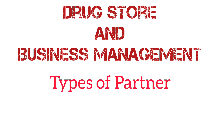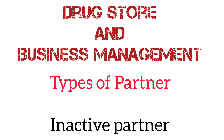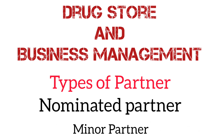There are many types of partners. One is a working partner — someone who actively works in the business. There is also an inactive partner who contributes money but does not actively participate. Next is a nominated partner — someone who shares their name as a partner but is not involved in day-to-day activities. There is also a minor partner who can contribute capital and share in profits but has limited rights.